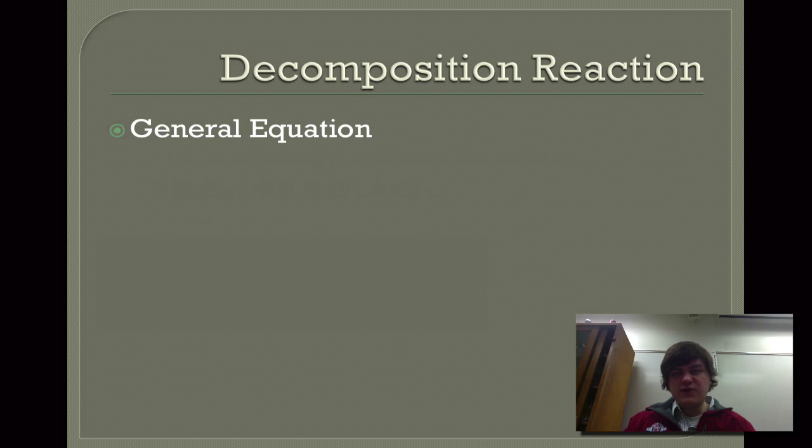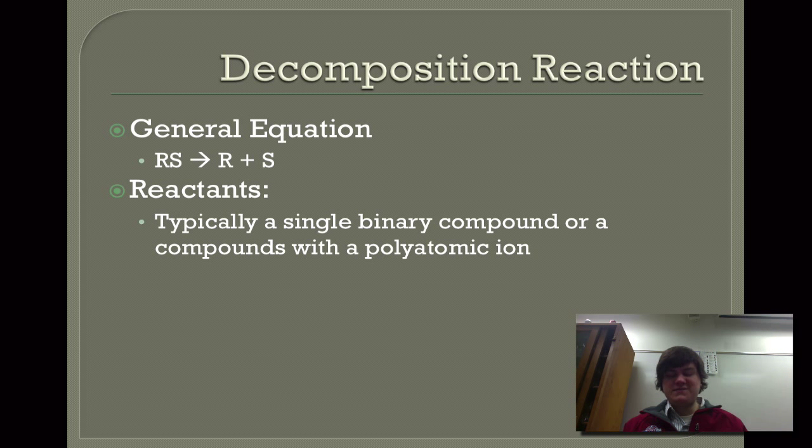The general equation for a decomposition reaction is RS yields R plus S. Reactants is typically just one binary compound. And if it's a binary compound, that means it's made up of only two types of atoms. Those are usually the easier type to predict how they'll decompose.